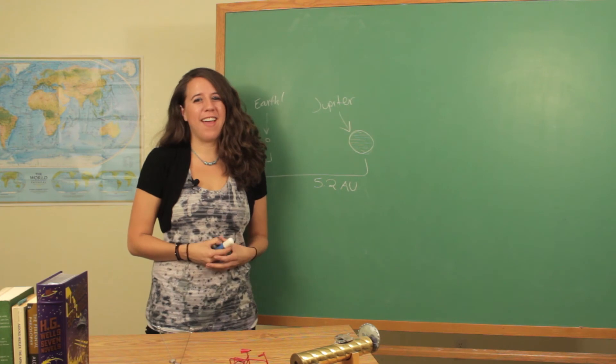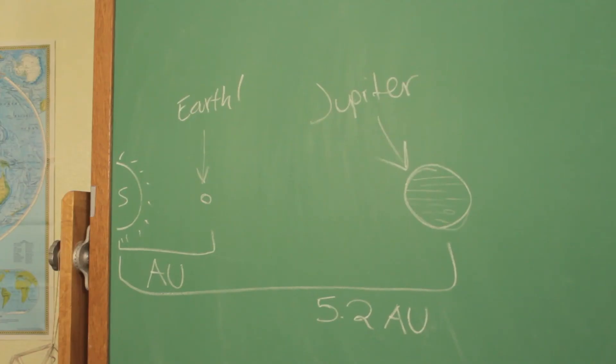I'm Kristen Oviedo, and that was How Far Away Is Jupiter in Astronomical Units.